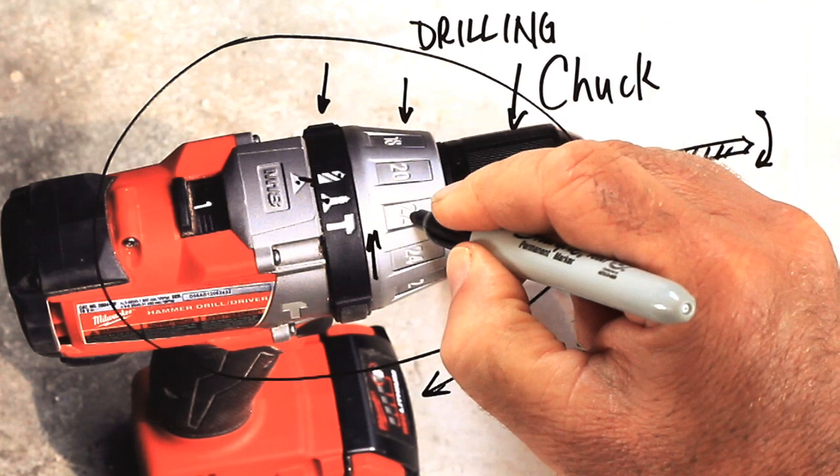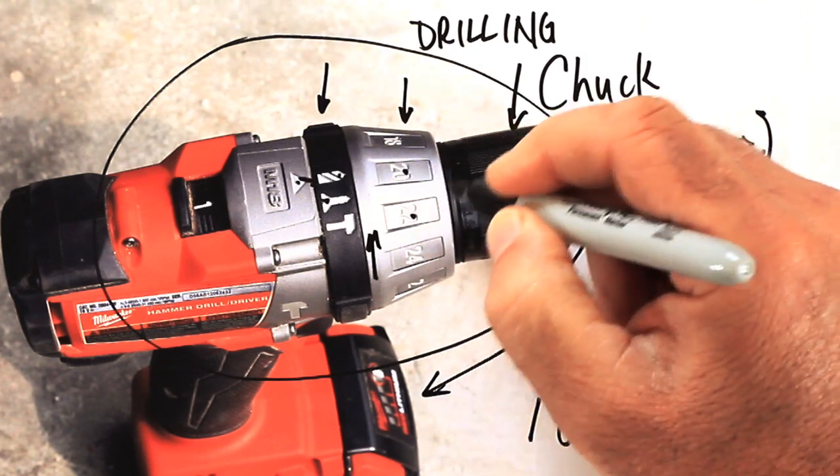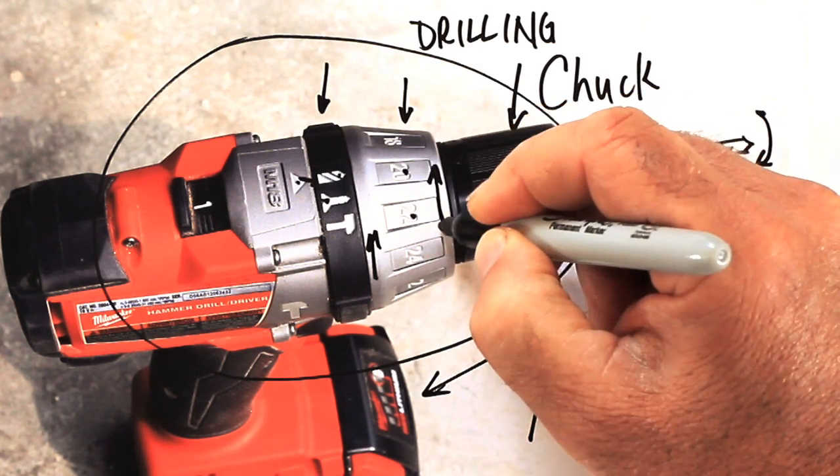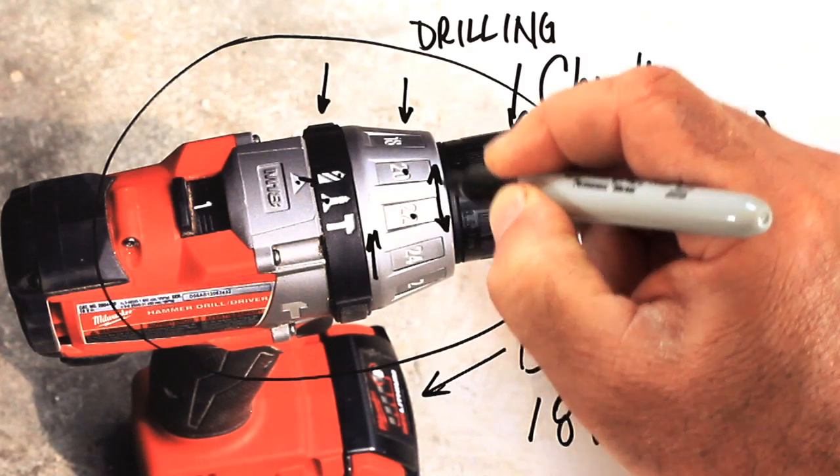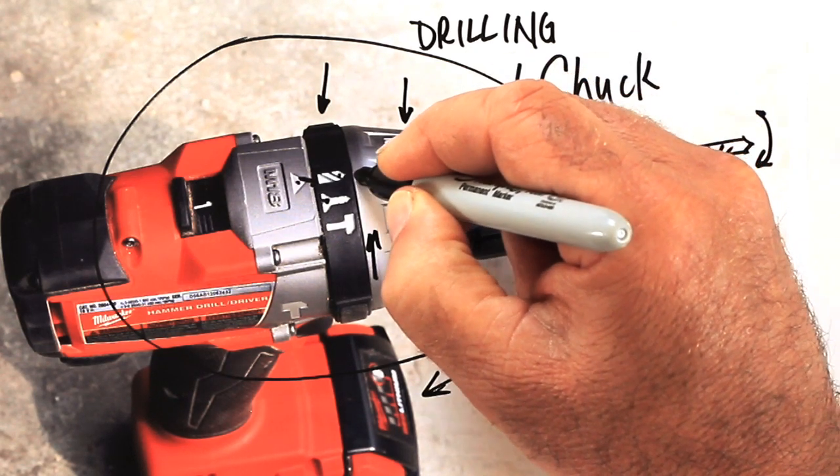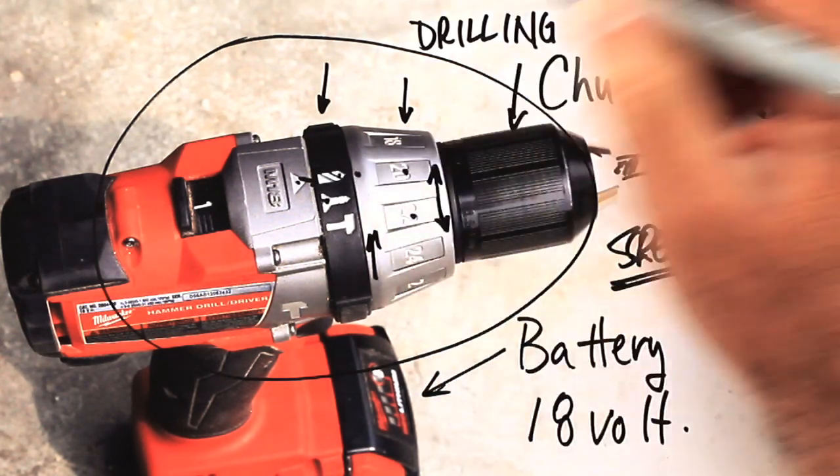This collar here rotates into different numerical positions and the higher the number, the more torque is delivered before that clutch slips. So you can adjust that depending on the size and depth of screw you want to drive.